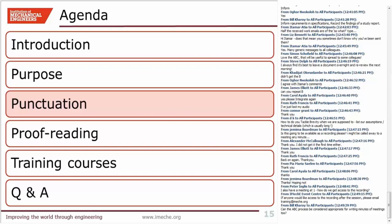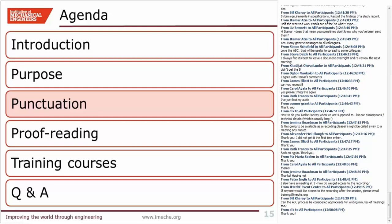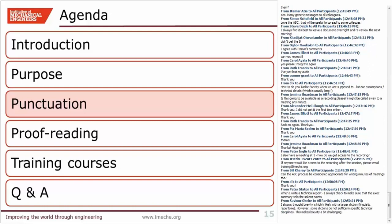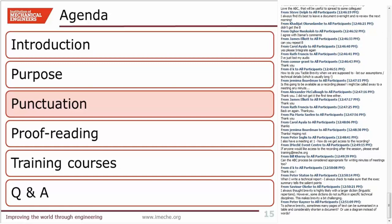We'll do one more quickly. From Bill: can the ABC process be considered appropriate for writing minutes of meetings too? Yes, absolutely, because it's a tip about writing generally. Yes, you can apply it to any writing. Minutes of meetings are a classic example: you've got to make sure you're accurately recording what was said, but briefly because you want people to read them, not file them. And it needs to be clear about who's going to take which action or what decisions were made. So yes, it would apply to meetings and to many different forms of writing.